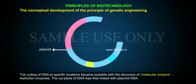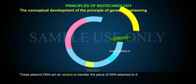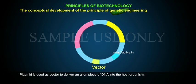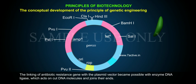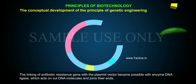The cut piece of DNA was then linked with plasmid DNA. These plasmid DNAs act as vectors to transfer the piece of DNA attached to them into the host organism. The linking of the antibiotic resistance gene with the plasmid vector became possible with the enzyme DNA ligase, which acts on cut DNA molecules and joins their ends.